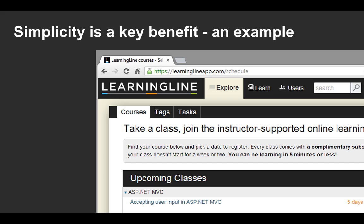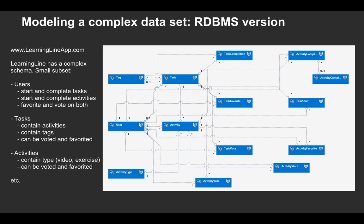I want to give you a concrete example. Let's take LearningLine — DevelopMentor's online learning platform. The lessons in there are referred to as tasks, which are about an hour. You can think of them as a set of lessons, like a lecture and exercises. A task is made up of a bunch of small activities. You can vote on these activities, complete them, and people can save notes and favorite them at both the task and the activity level.